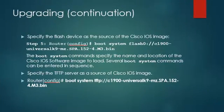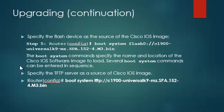After the image is saved to the router's flash memory, configure the router to load the new image during boot-up using the boot system command. There are two ways to use this command: specifying the flash device as the source of the Cisco IOS image, or specifying a TFTP server as the source. Several boot system commands can be entered in sequence to give the system a fault-tolerant boot plan.